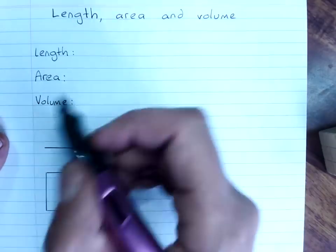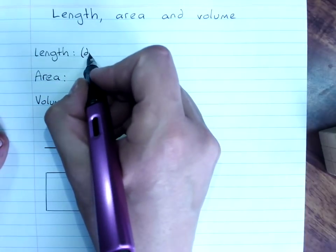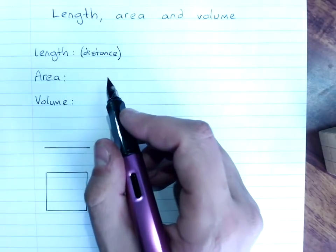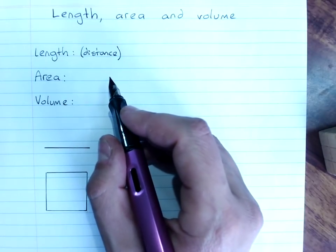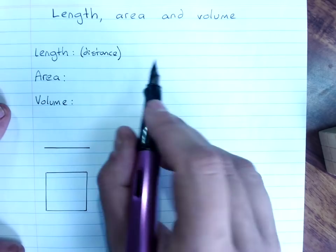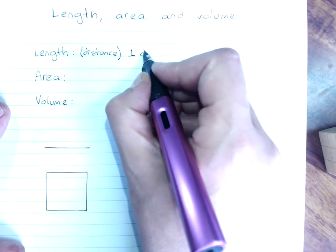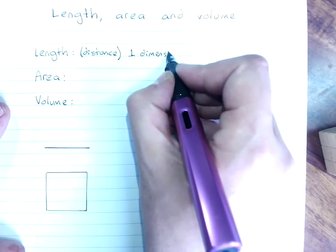When I measure length or distance, so things like the height or the width of something, or the length of an object, or the distance between two points, I'm measuring one dimension, one direction.